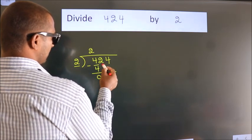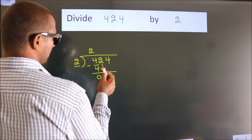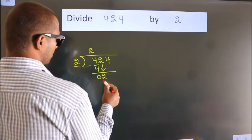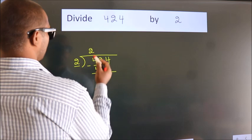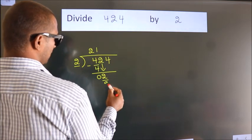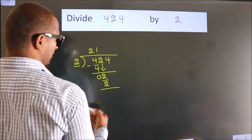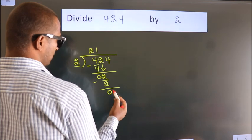After this, bring down the beside number. So 2 down. So 2. When do we get 2 in 2 table? 2 1s, 2. Now we subtract. We get 0.